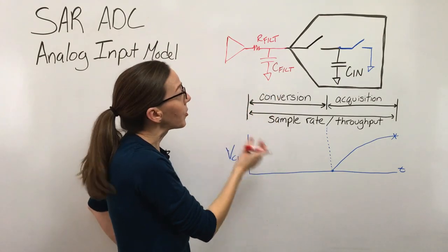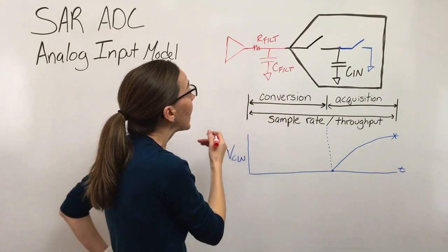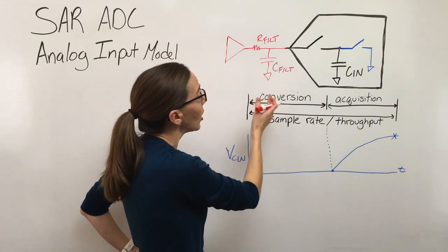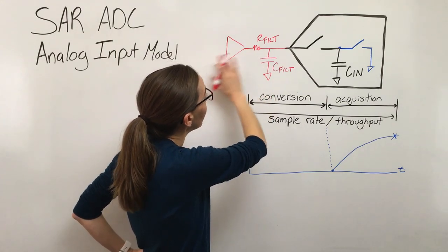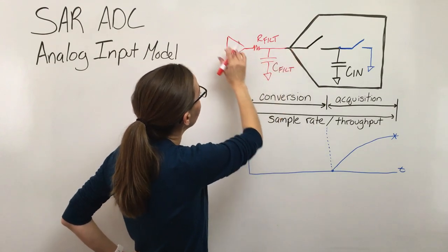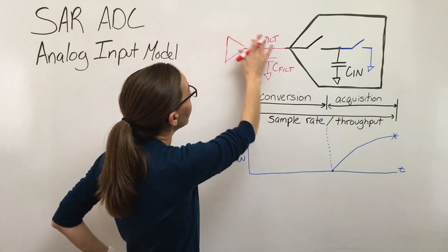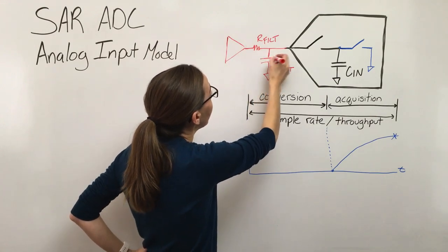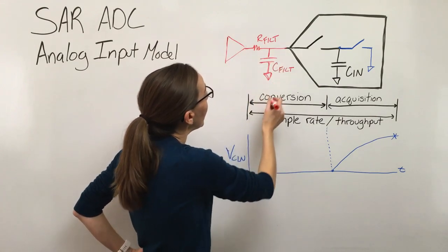different things. I'm going to talk about that in a later video, but for now, simply put, it's limiting the bandwidth of the signal that's downstream. Any noise that's coming in from the signal chain and from the driver, it's going to limit the bandwidth of that noise coming in.